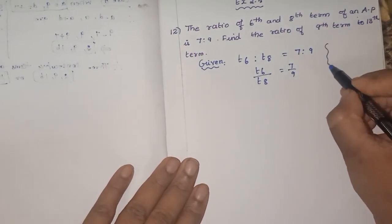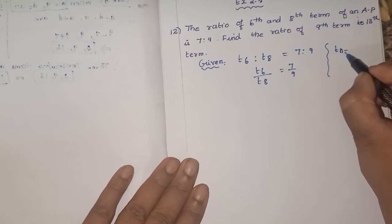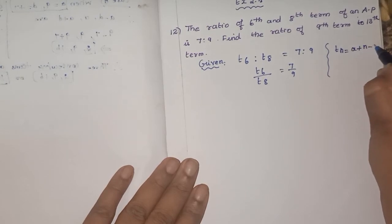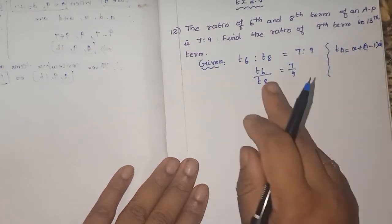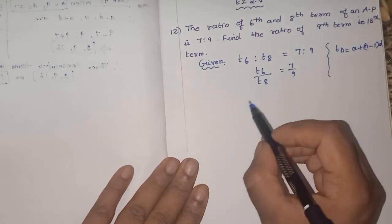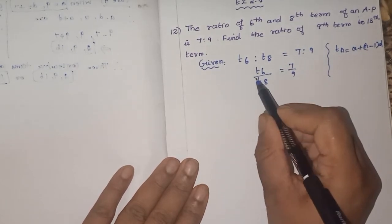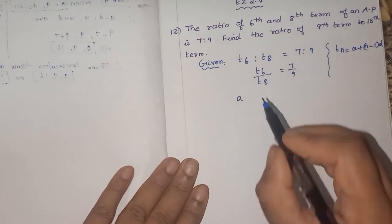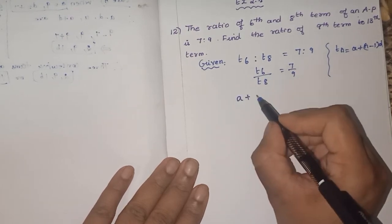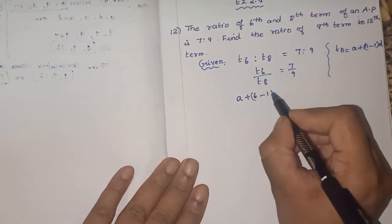The formula is TN is equal to A plus N minus 1 into D. So T6 is coming, only N we know. So how will you write T6? A as it is, plus N is 6, 6 minus 1 into D.